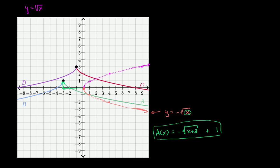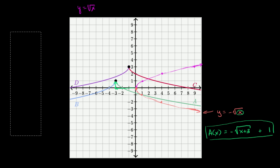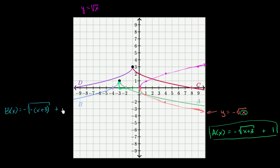Now let's think about b(x). How is b(x) different than a(x)? b(x) starts at the same point, but it's flipped over the vertical line x equals negative 3. Another way of thinking about it is the domain is different: a(x) is defined for x greater than or equal to negative 3, while b(x) is defined for x less than or equal to negative 3. What we need to do is flip the sign of everything under the radical. So b(x) is going to be equal to the negative square root of negative x plus 3, and then plus 1.